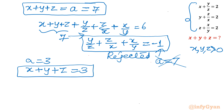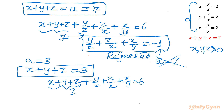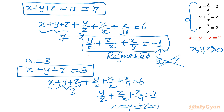Since a is our substitution for x + y + z, our answer is x + y + z = 3. You can verify: putting a = 3 gives y/z + z/x + x/y = 3, which is consistent with x = y = z = 1. So our final answer is x + y + z = 3. I hope you liked this video. Thank you so much for watching. Don't forget to like, share, and subscribe. Bye-bye till the next video. Good luck.